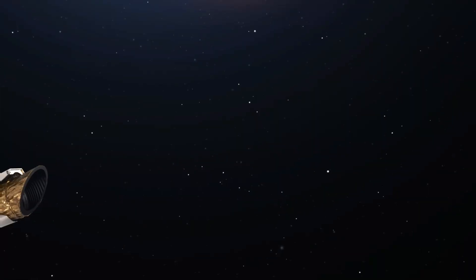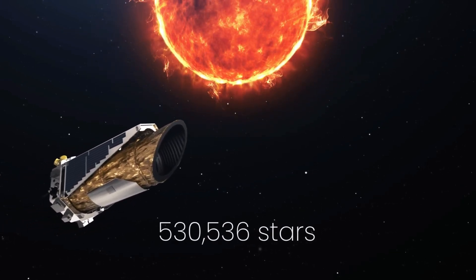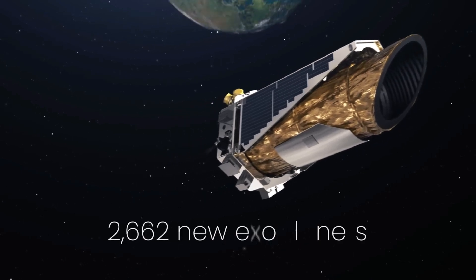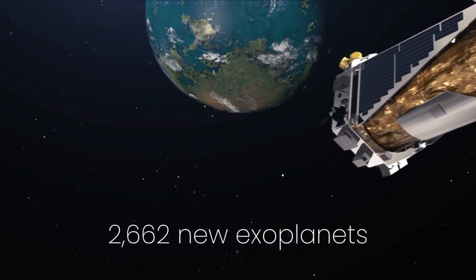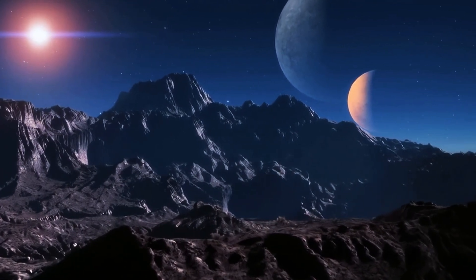In its nine years in space, Kepler observed 530,536 stars and confirmed the existence of 2,662 new exoplanets. These exoplanets are unlike anything we've ever seen in our solar system before.